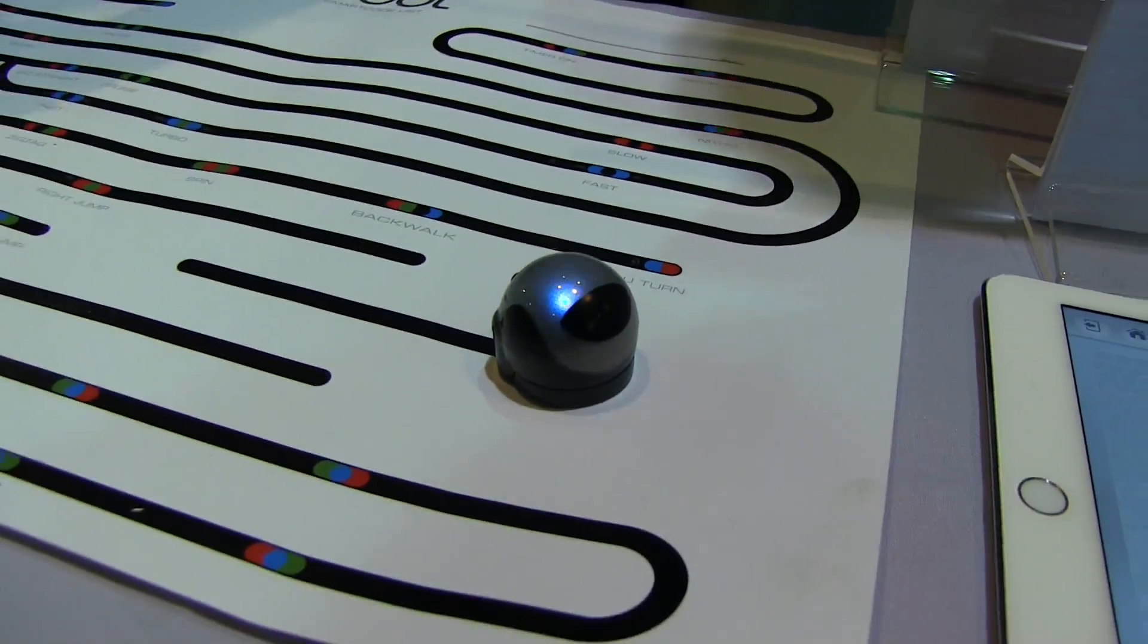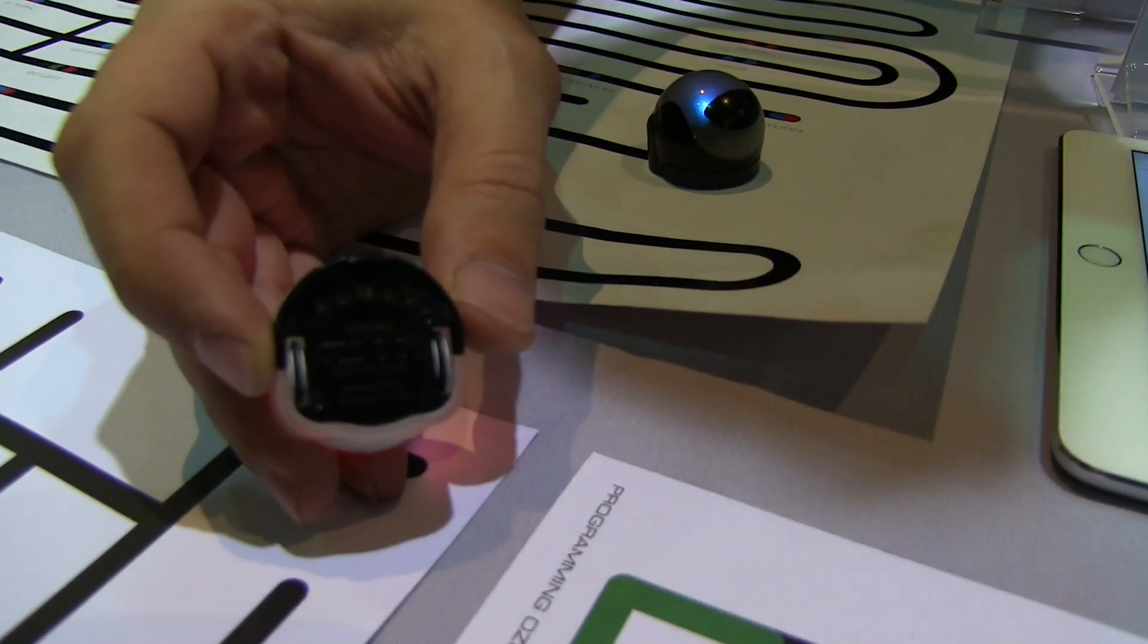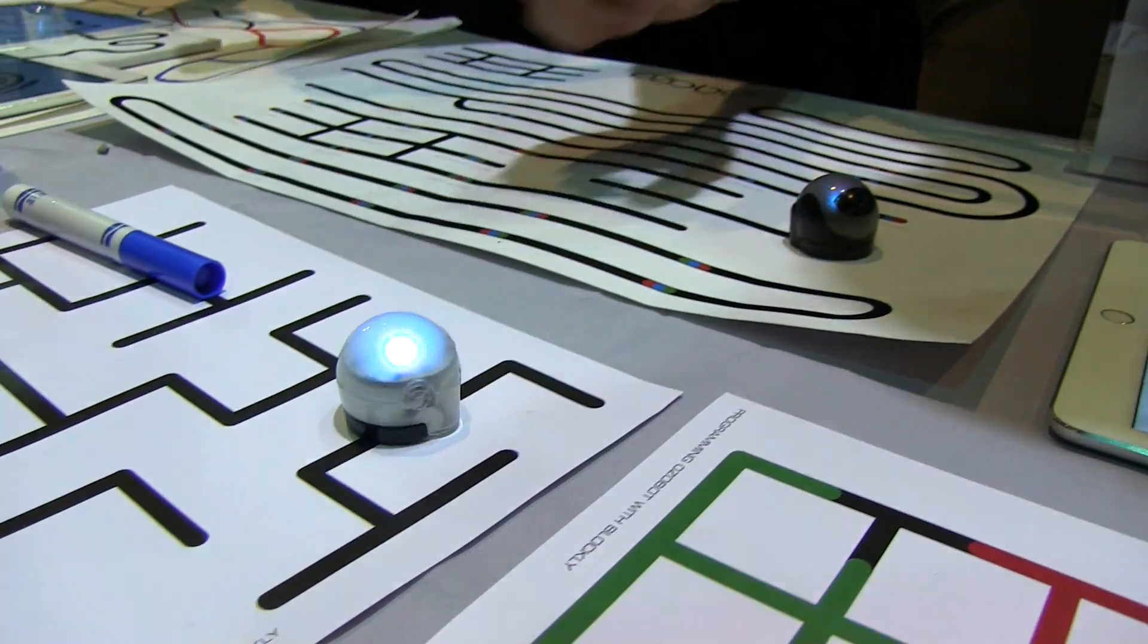Can you just walk me through a demo? Yeah, sure. So basically Ozobot's little sensors on the bottom there are designed to read lines and color combinations. So you can see Ozobot will follow these line paths.